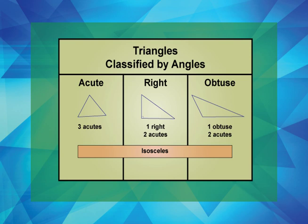In terms of isosceles triangles, they can be acute, right, or obtuse. In all cases, two acute angles are congruent. In the case of equiangular triangles, they can only be acute triangles.